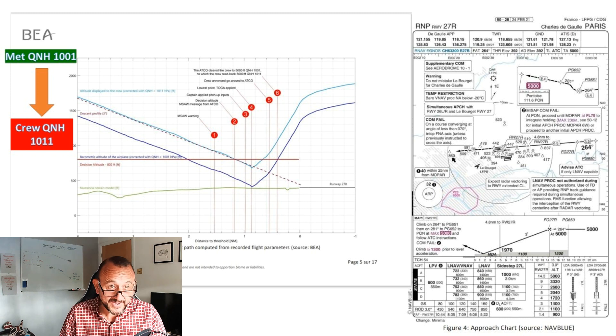You can see the correct path at the top and the actual descent of the airplane in the blue line. What I've added on the left hand side here is the met QNH of 1001 and the crew's QNH set of 1011. Now just to have a bit of context to this, if you're struggling to understand why the aircraft got so low...